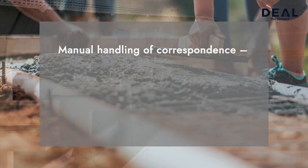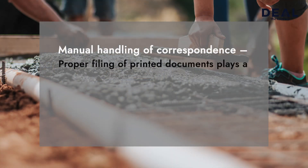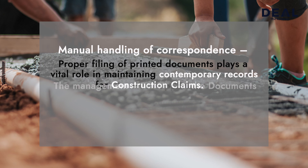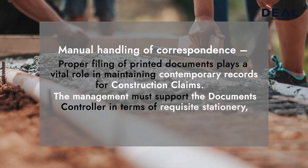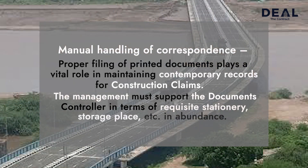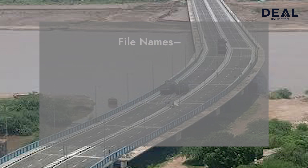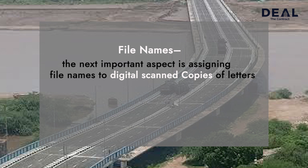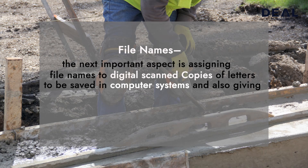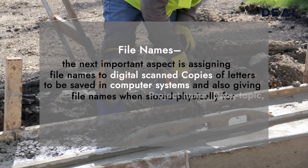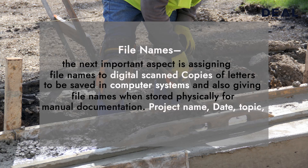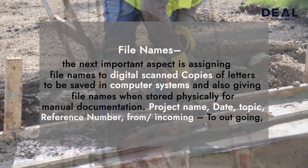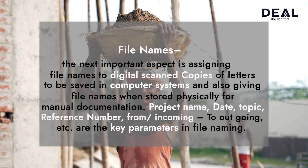Manual handling of correspondence: Proper filing of printed documents plays a vital role in maintaining contemporary records for construction claims. The management must support the document controller in terms of requisite stationery, storage place, etc. in abundance. File names: The next important aspect is assigning file names to digital scan copies of letters to be saved in the computer system and also giving file names when stored physically for manual documentation. Project name, date, topic, reference number, from or incoming, to or outgoing, etc. are the key parameters in file naming.